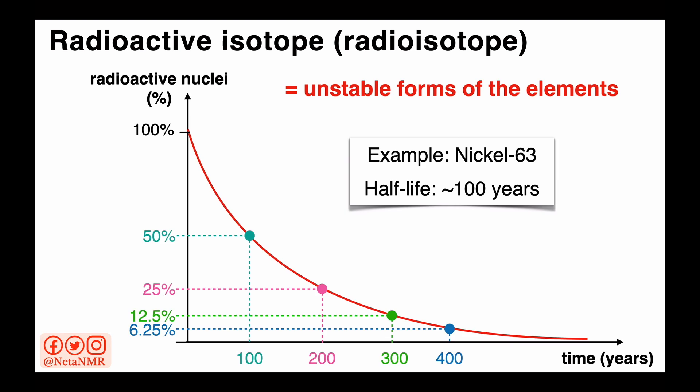Let's have a look at an example so we can understand this decay in time of radioisotopes. If we consider a radioisotope whose half-life is around 100 years, then after its half-life, so after 100 years, the number of radioactive nuclei we're left with is half of what we had in the beginning.